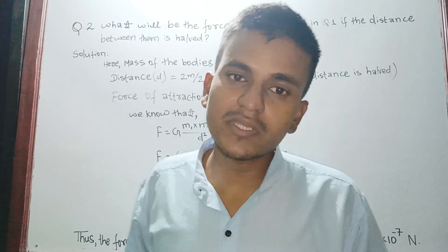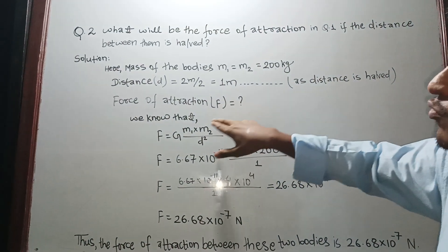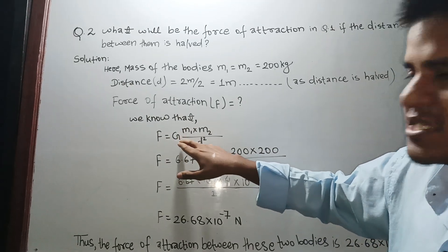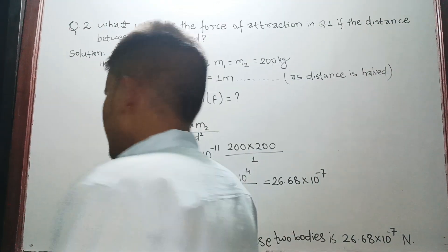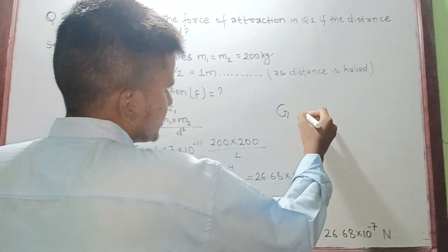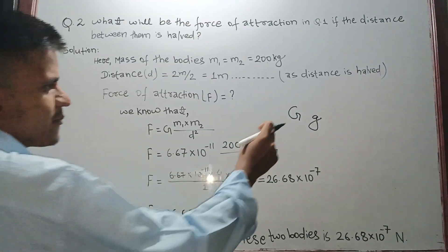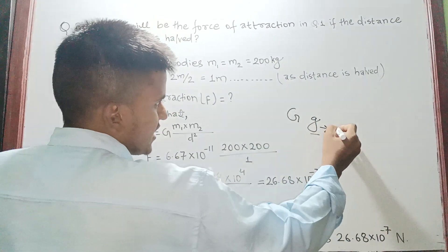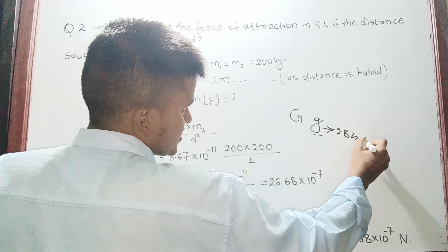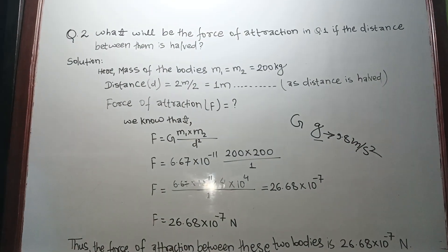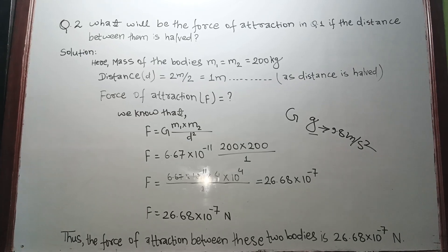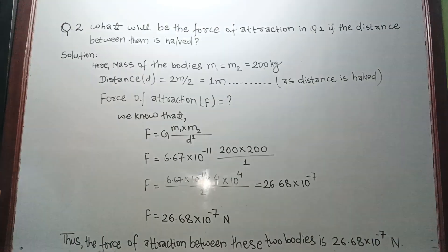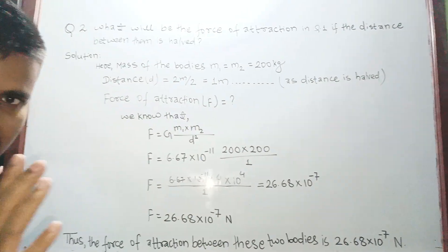The force of attraction - we know from the formula that F equals to capital G. Now you have to remember that this capital G or small g - there's a big difference. This capital G stands for the gravitational constant, and this small g is gravity value which is 9.8 meters per second squared. So there is a difference, and the capital G value is 6.67 × 10⁻¹¹. So don't get confused here and never write the small g. That would be a mistake.